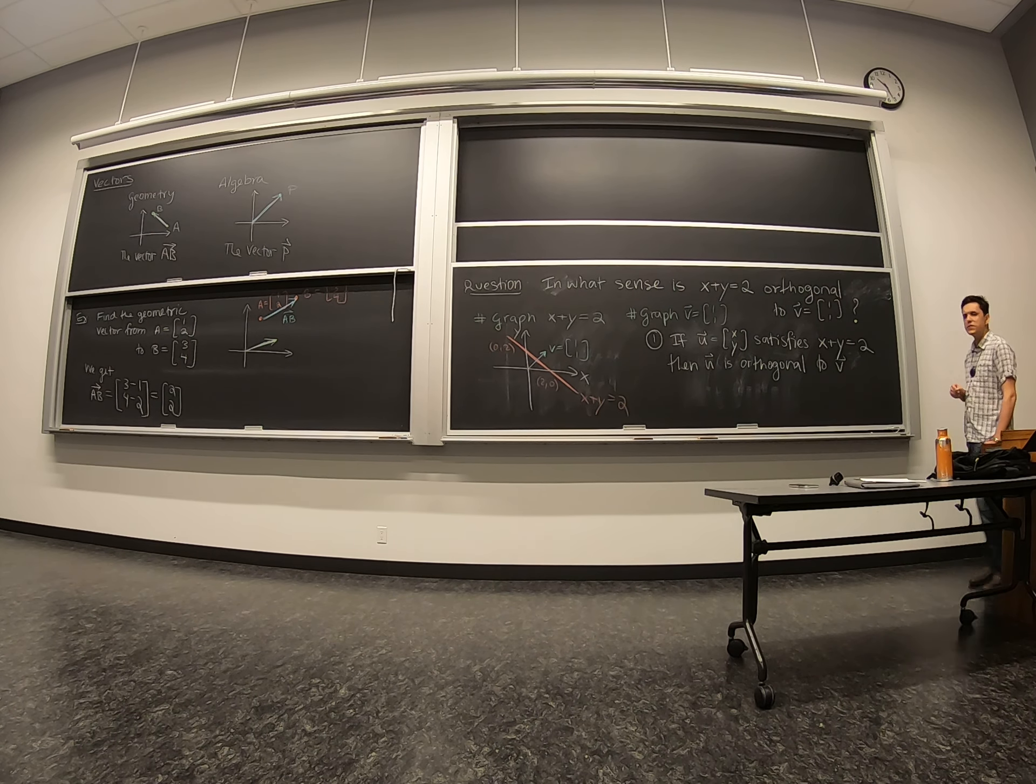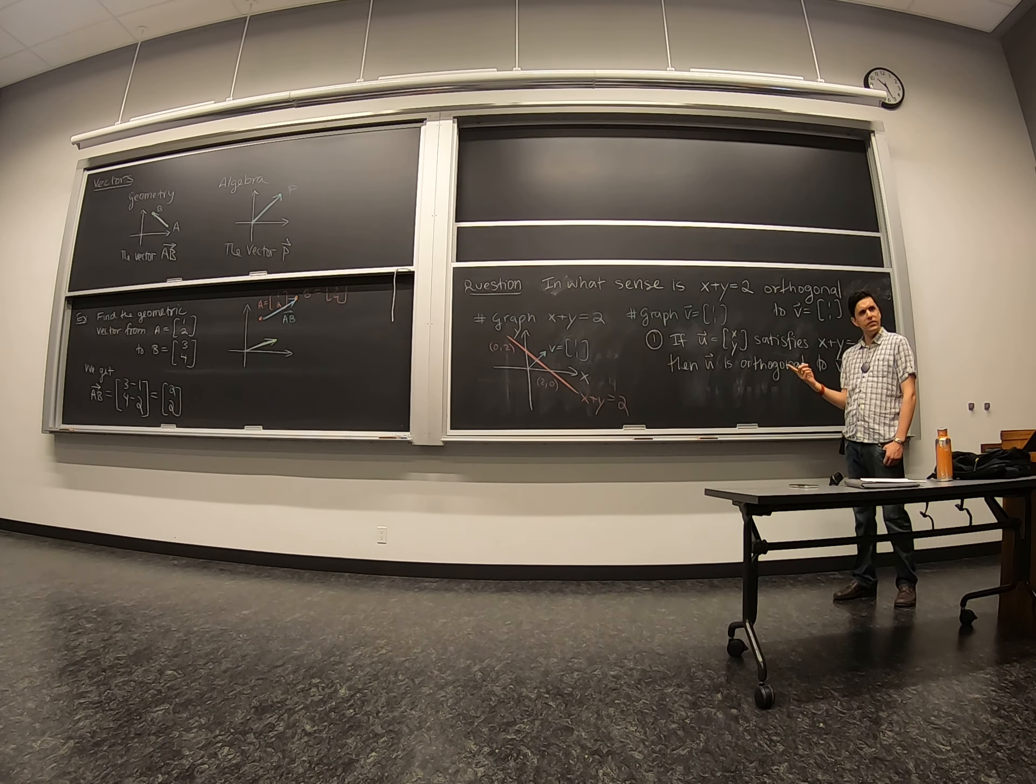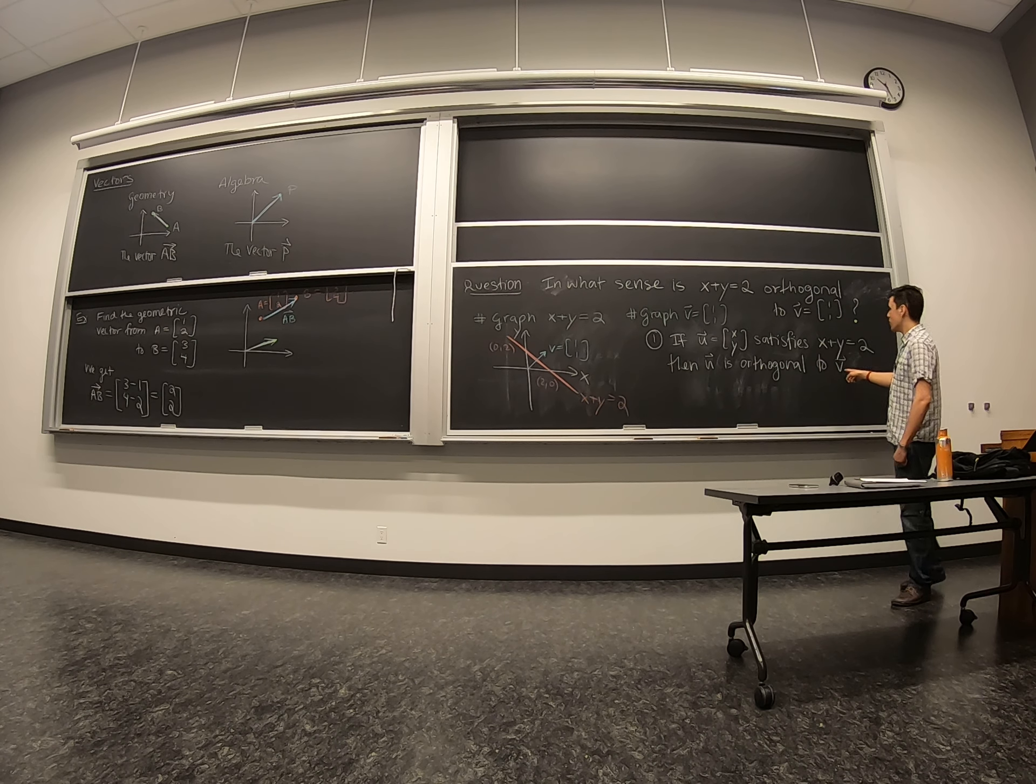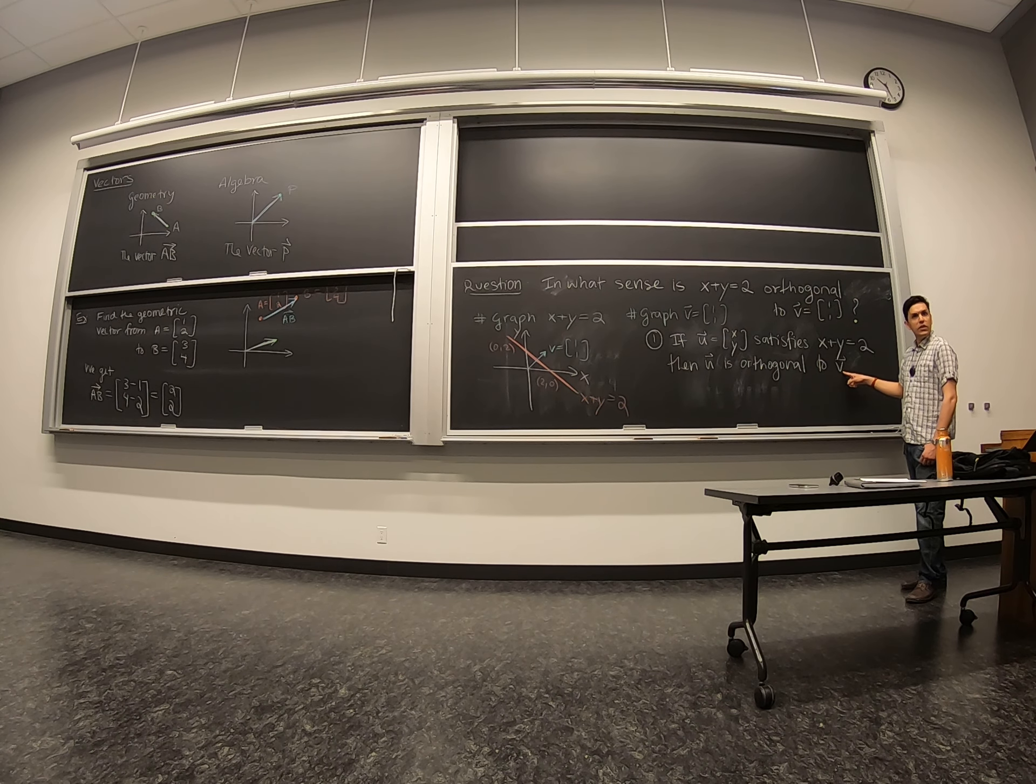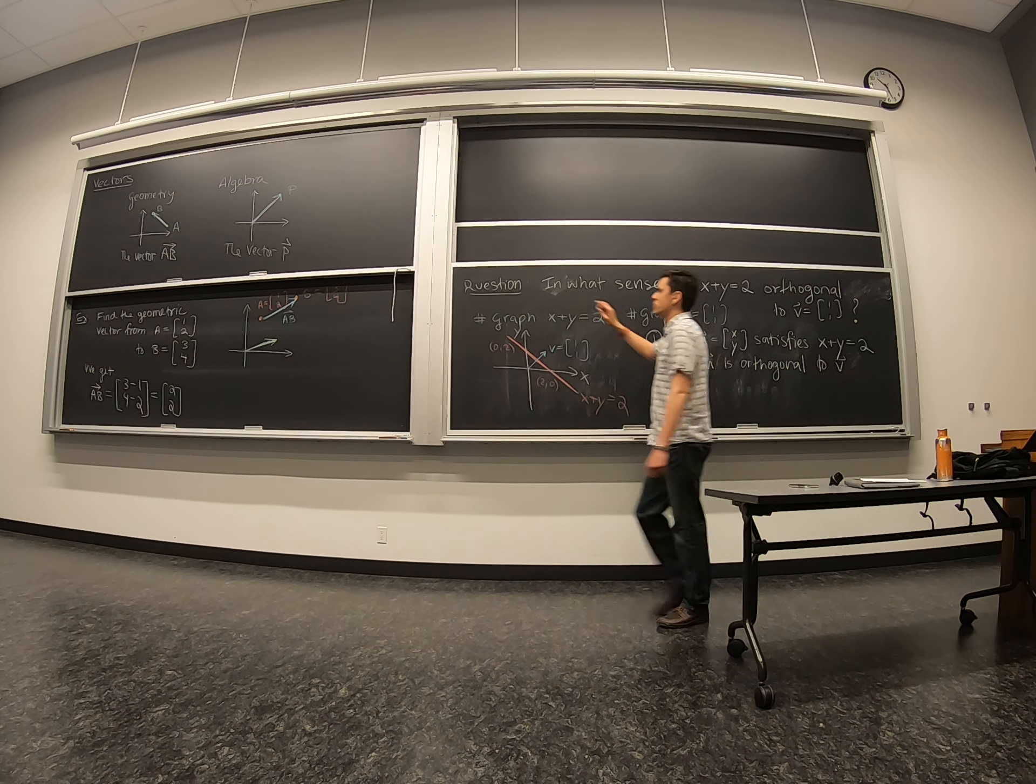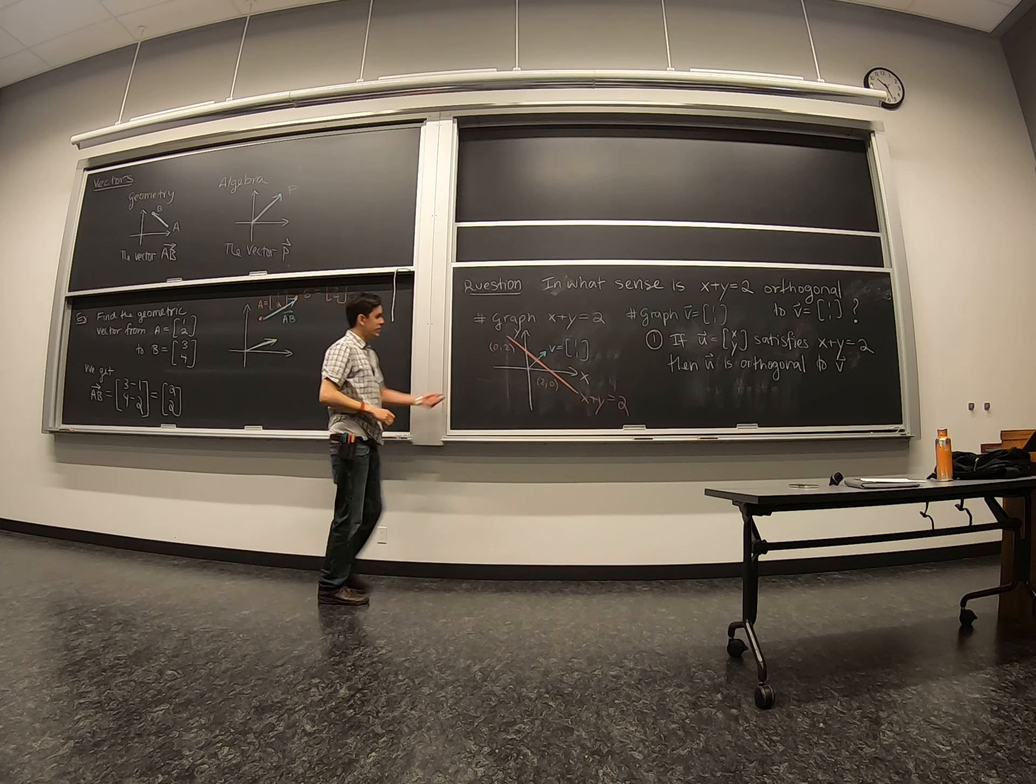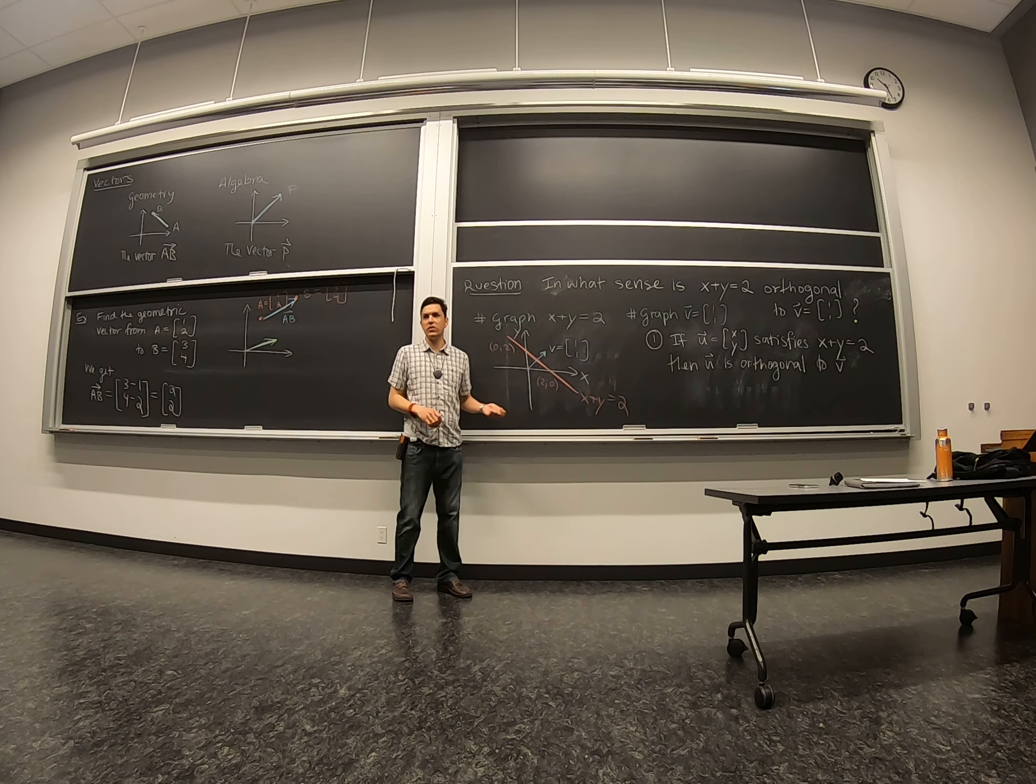Okay, so one sense in which they could be orthogonal is if you pick a point on the line, it would be orthogonal to this vector, right? So this is thinking in the algebra side. If you have a vector that lives on this line, then it must be orthogonal to v.